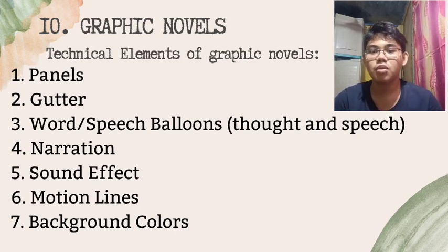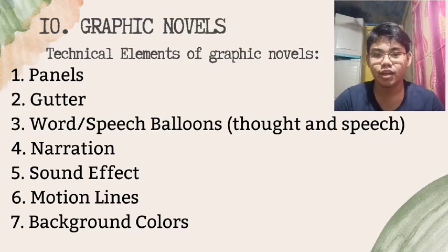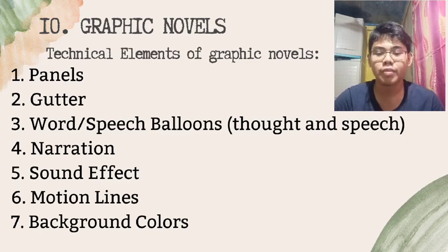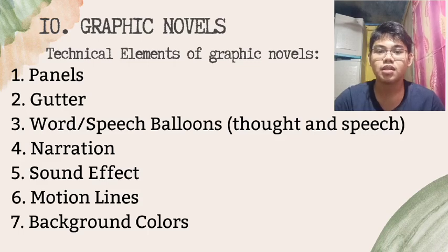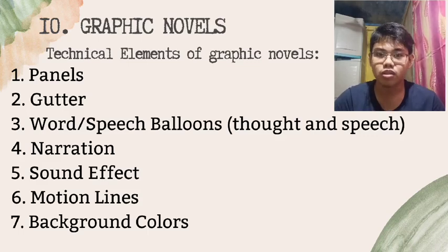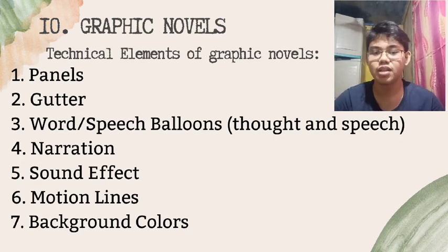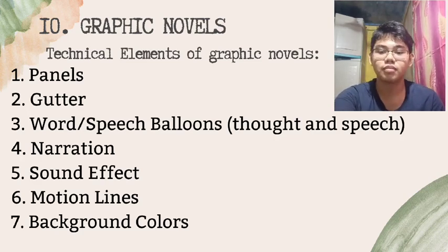The sixth element is motion lines — lines that appear behind a moving object or person, parallel to the direction of movement, to make it appear as if it is moving. The seventh and last element is background colors. Each scene has different colors, intended to make each scene lively.